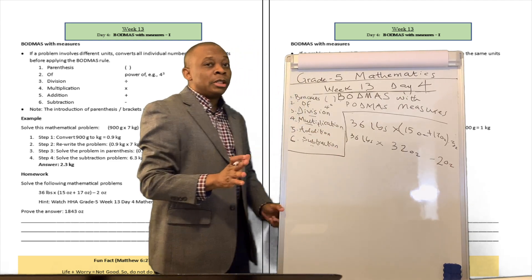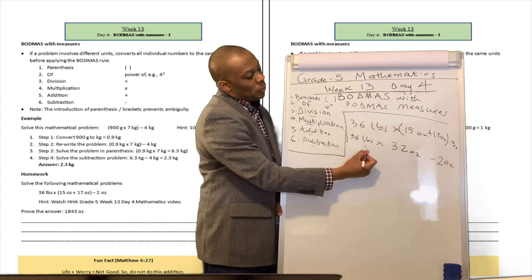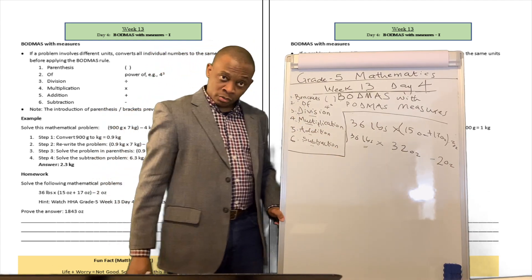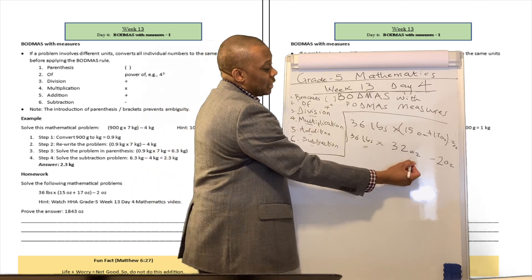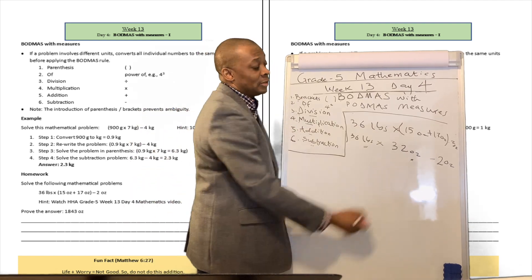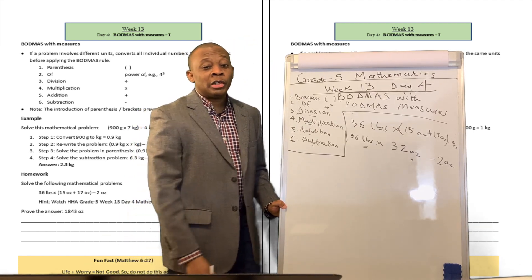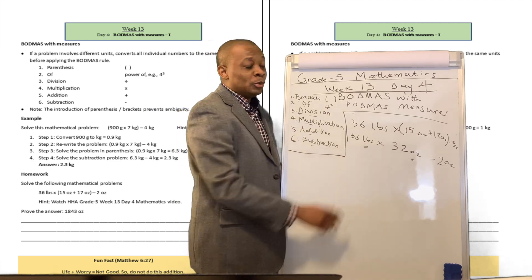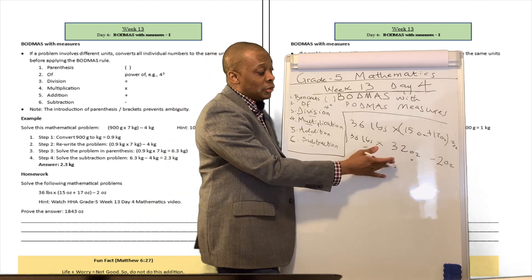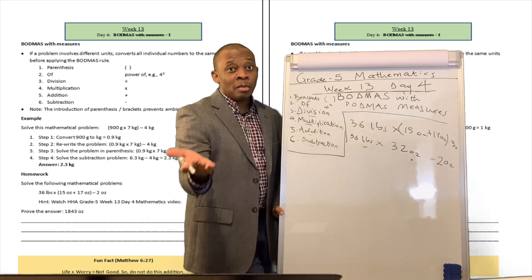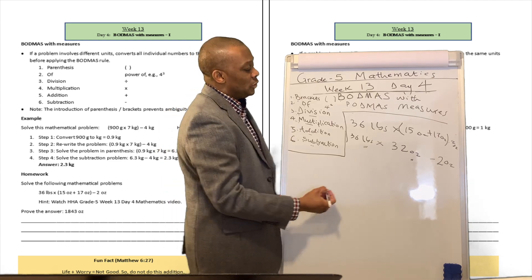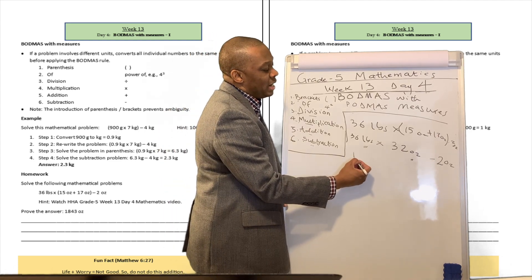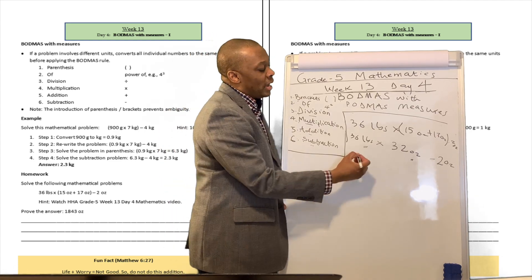Now we've got a problem here, because 36 is expressed in pounds and 32 is expressed in ounces. We've got to convert the pounds to ounces before we can do this multiplication. So you're going to ask yourself: how many ounces are in 1 pound?